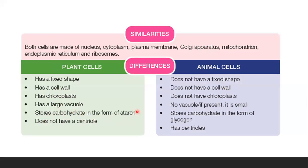Plant cells store carbohydrates in the form of starch, while animal cells store carbohydrates as glycogen. Lastly, plant cells do not have centrioles. You may remember from a previous video that centrioles contain spindle fibers, which are essential for cell division — allowing cells to grow. Animal cells have centrioles while plant cells do not.